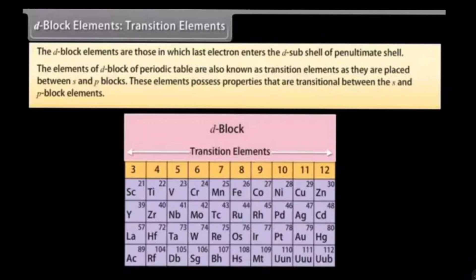Hello everyone. In this video we are going to discuss d and f block elements. We have to discuss d block elements separately and then f block elements. In our periodic table, these elements are known as d block, from group 3 to group 12. The d block elements are those in which the last electron enters the d sub shell of the penultimate shell. When you write the configuration and your last electron enters in the d sub shell, then the element belongs to the d block.